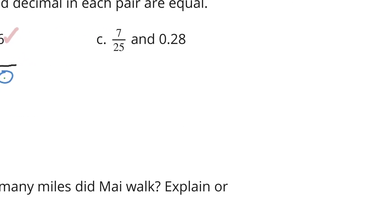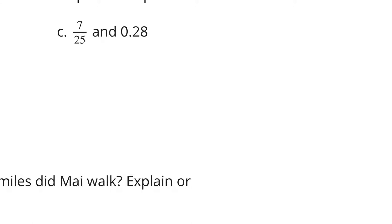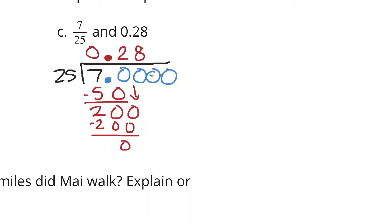Sliding over to C. 7 twenty-fifths and 28 hundredths. If we take 7 and divide by 25, twenty-five does not go into 7. But it goes into 70 about 2 times. 2 times 25 is 50. We have 20 left over. Bring down a 0 for 200. And 25 times 8 is that 200. We're left with a remainder of 0. Our solution here, 7 divided by 25 is 28 hundredths, which is matching that.